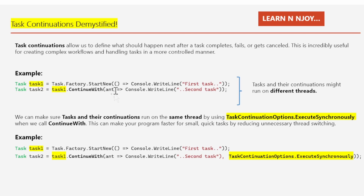Here I have written 'ant', which is the antecedent argument that represents the first task, so you can access its result or check for exceptions. Here I'm not accessing any result or exception — I'm just printing 'second task' to the console window using console.writeline.